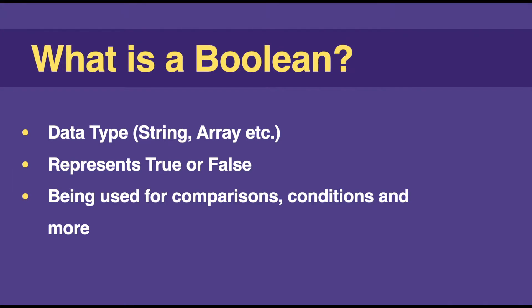Alright, let's first talk about what a boolean is. A boolean is one of the data types in programming, like strings, arrays, objects, and so on. Each data type has a representation — for instance, a string variable represents words or characters, an array represents a collection of variables, and a boolean variable represents two conditions in programming, which is either true or false.